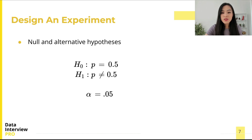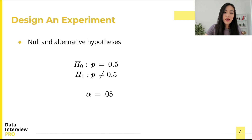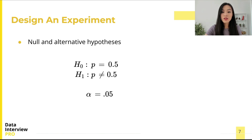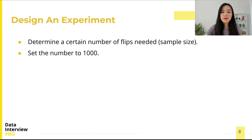Now let's go over the steps to solving the problem. The first step is to specify the null and alternative hypothesis. We assume the coin is fair under the null hypothesis and set the null hypothesis to be p equals 0.5. Let's also set the significance level alpha to be 0.05, which is a commonly used significance level.